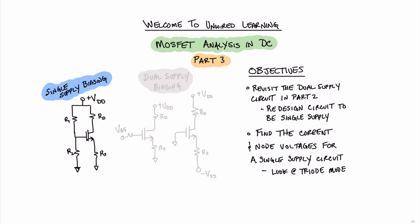Welcome to Unwired Learning. In this, the third part of the MOSFET series on analysis in DC, we are going to revisit the dual supply circuit we did in the previous video. In particular, we're going to look at how we can redesign that circuit to be a single supply circuit. We're going to solve a single supply biasing circuit.